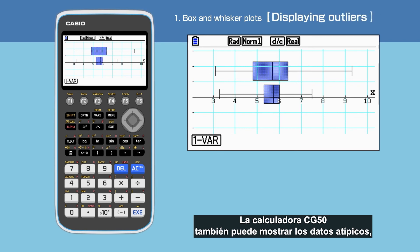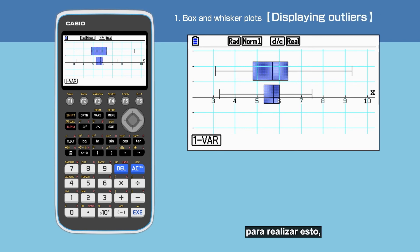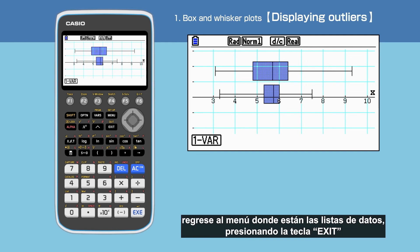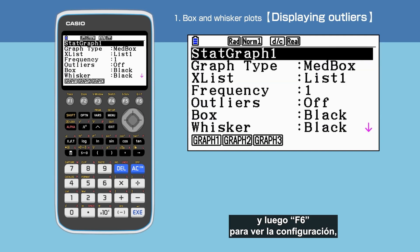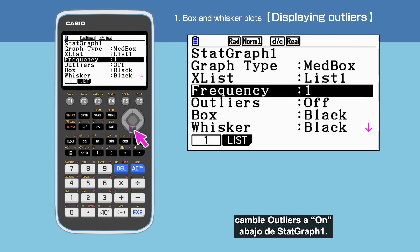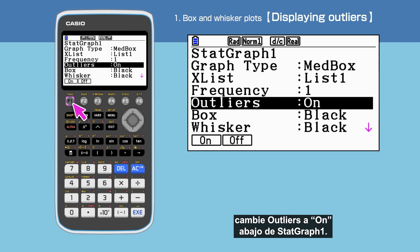This CG50 can also display Outliers. In order to do this, go back to the data screen by pressing Exit, then press F6 to display Setup. Switch on the Outliers under the Stat Graph 1.